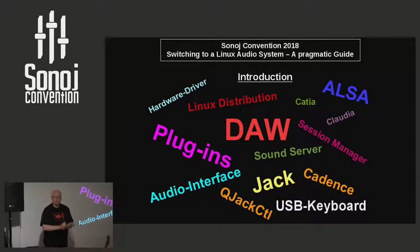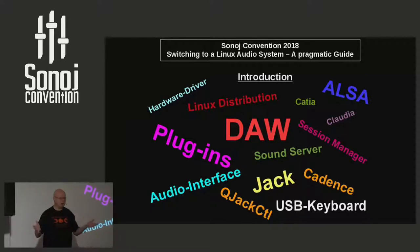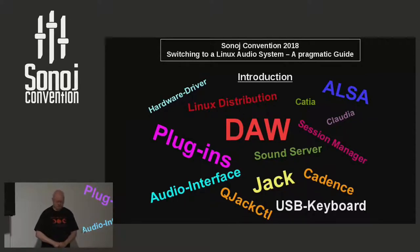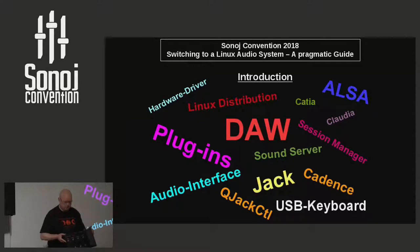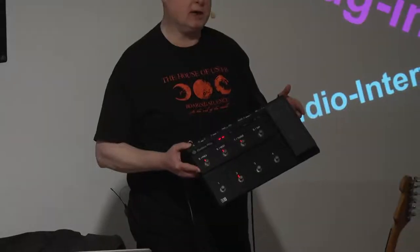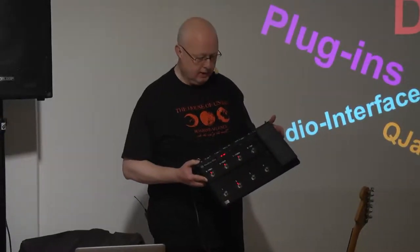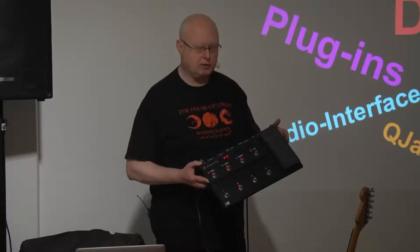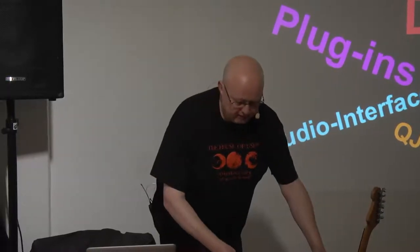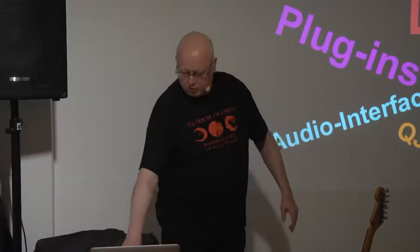If you want to start doing recording, you need a computer, of course, and you need audio hardware. Nowadays most of the audio hardware is equipped with a USB interface. In my demonstration I'm using such a USB audio interface — it's a combination of audio interface and controller from Native Instruments. It comes with two inputs, two outputs and an integrated MIDI interface. For doing MIDI recording, I'm using this little keyboard, the Korg Nano Key 2.